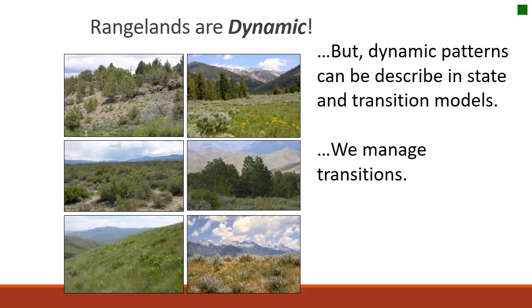Rangelands are obviously dynamic, and because we don't follow the linear succession pathway in most rangelands, we need a way to conceptualize what's happening. State and transition models provide us with a framework to understand transitions and thresholds so we can better manage the landscape to meet our goals and objectives.